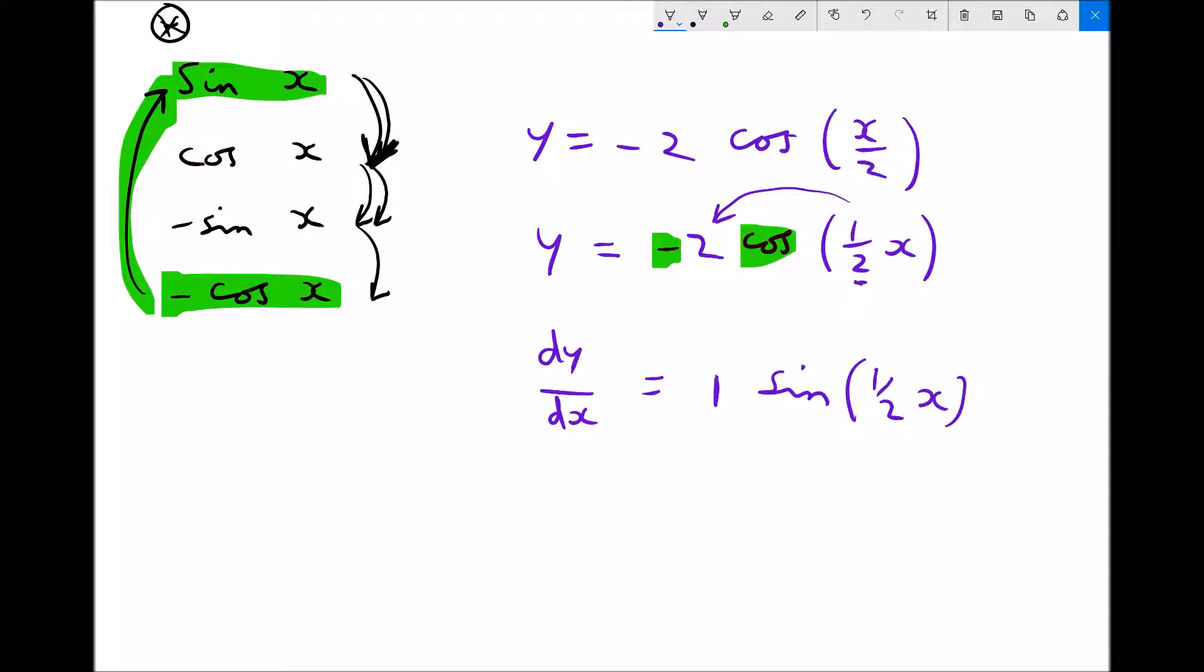In theory, there's two different ways of looking at this. We could either treat it as a minus cos function which differentiates to sine, or we could treat it as a cos function with a coefficient of minus 2, and then that would differentiate to minus sine.